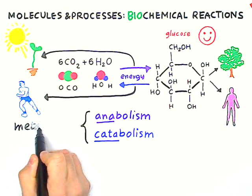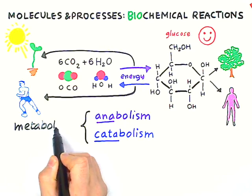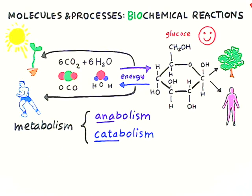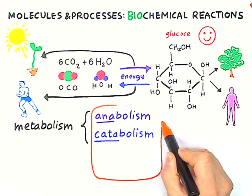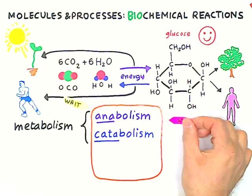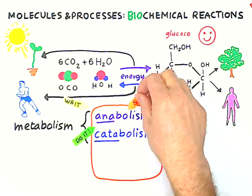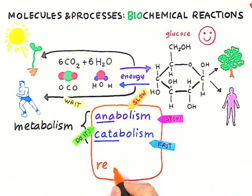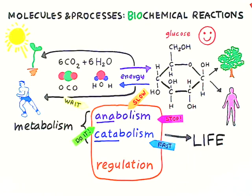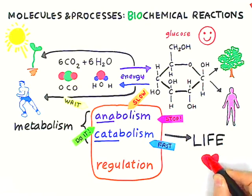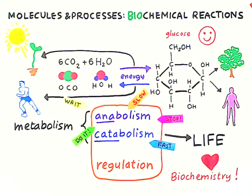Anabolism and catabolism together are referred to as metabolism. And in a living system, all of these processes are, of course, controlled. So there's a third type of very important chemical reactions, which are regulatory. And these three types of chemical reactions together is what makes life possible on this planet. In fact, this is what biochemistry is all about.